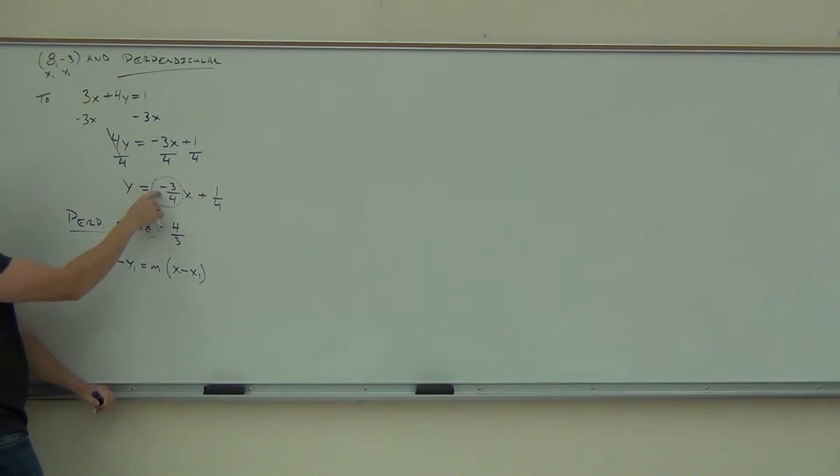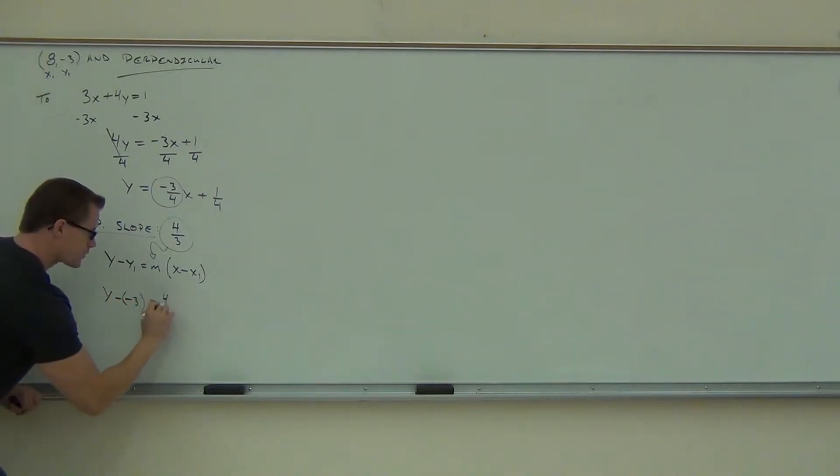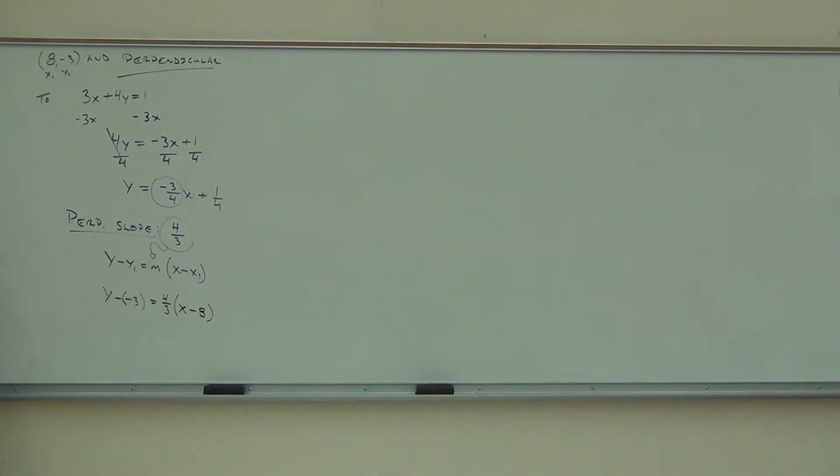Are we going to use this m up here? No, definitely not. We're going to use the one that said perpendicular because that's what our problem is referring to. So we'll do y minus negative three. That's going to be in those parentheses because we're subtracting a negative. That will eventually change to a plus. Equals four-thirds x minus eight because x1 is eight.